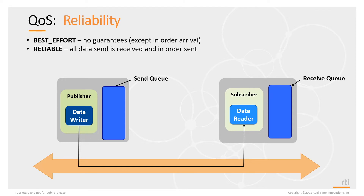When you have a reliable connection, any data sent by a data writer — for example D1 and D2 — will be stored in a queue on the data writer called a send queue or data writer cache. A copy of this data is kept just in case the data gets lost, so that if the network drops it, there's a copy to send as a repair packet.